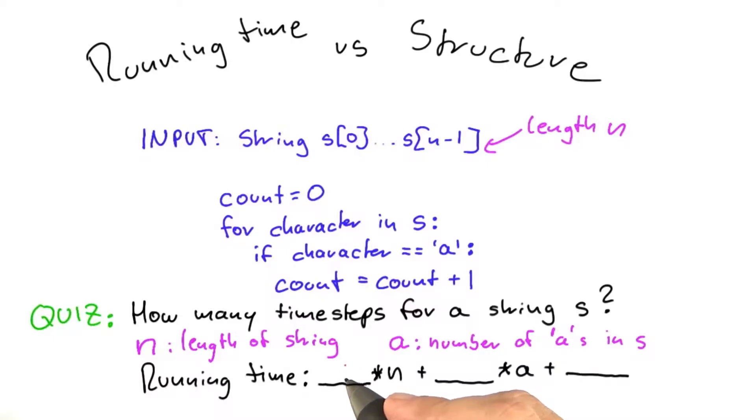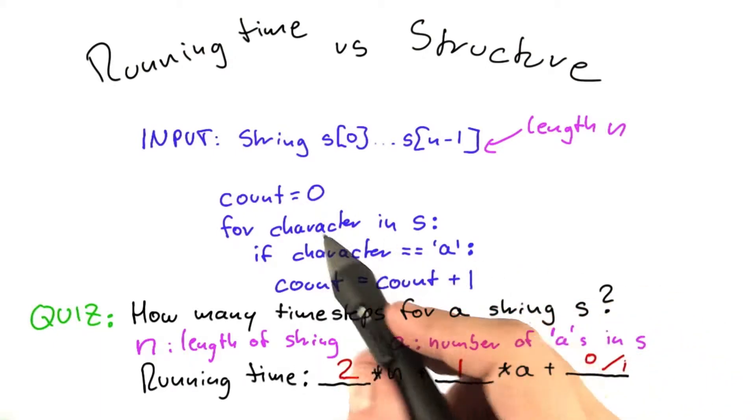There's actually two correct answers here, depending on how you think about it. Both answers have in common that it's always 2 times n plus 1 times a. And depending on how you count this line here, it's going to be either a 0 or a 1. And the reason for that is the following.